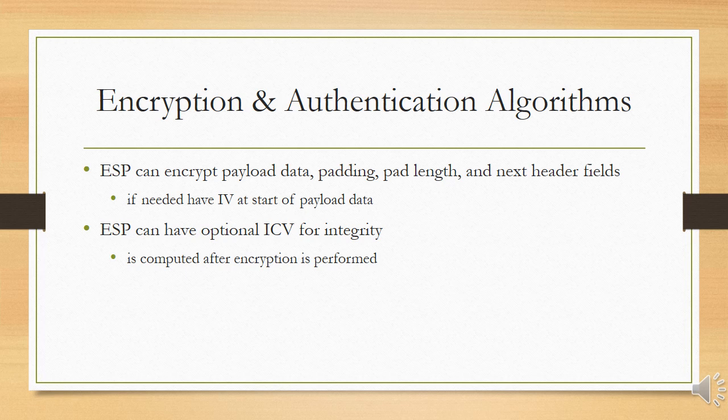The ICV field is optional. It is present only if the integrity service is selected, provided by either a separate integrity algorithm or a combined mode algorithm that uses an ICV. The ICV is computed after encryption is done. This order of processing facilitates rapid detection and rejection of replayed or bogus packets by the receiver prior to decrypting the packet, potentially reducing the impact of denial of service attacks. It also allows for the possibility of parallel processing of packets at the receiver — that is, decryption can take place in parallel with integrity checking.